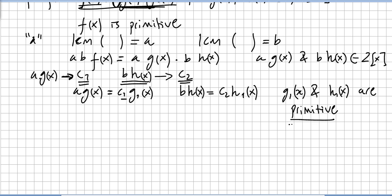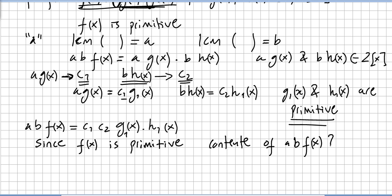It is obvious that ab·f(x) equals c1·c2·g1(x)·h1(x). Since f(x) is primitive, what is the content of ab·f(x)? The content must be ab.